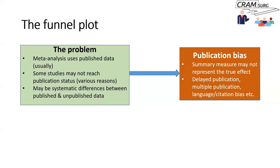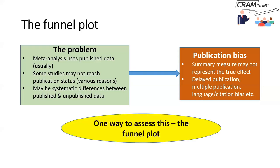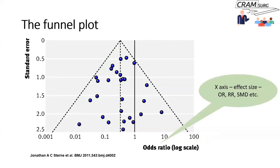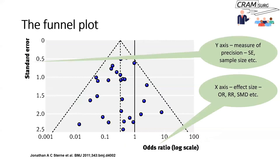It could also be that delayed publication, multiple publications, language bias, or citation bias causes differences in the estimated true effect. Studies published in some languages don't necessarily make it into meta-analyses, which typically use English-language literature. One way to assess whether there's publication bias is what the funnel plot is all about.